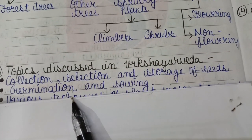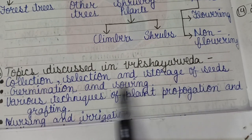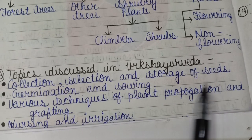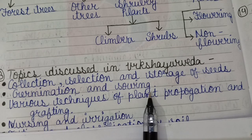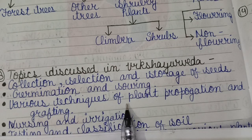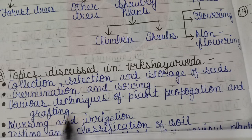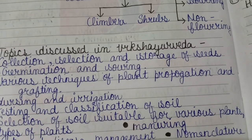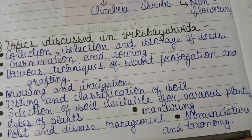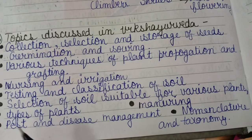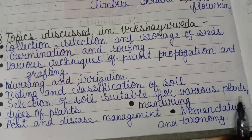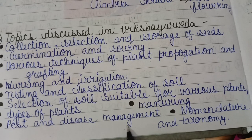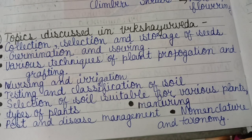Topics discussed in Vriksha Ayurveda include: collection, selection and storage of seeds; germination and sowing; various techniques of plant propagation and grafting; nursing and irrigation; testing and classification of soil; selection of soil suitable for various plants; types of manuring; pest and disease management; and nomenclature and taxonomy.